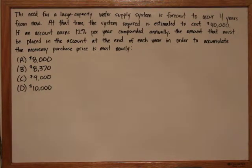So this problem is on compounding periods. The problem statement reads: The need for a large capacity water supply system is forecast to occur four years from now. At that time, the system required is estimated to cost $40,000. If an account earns 12% per year compounded annually, the amount that must be placed in the account at the end of each year in order to accumulate the necessary purchase price is most nearly: